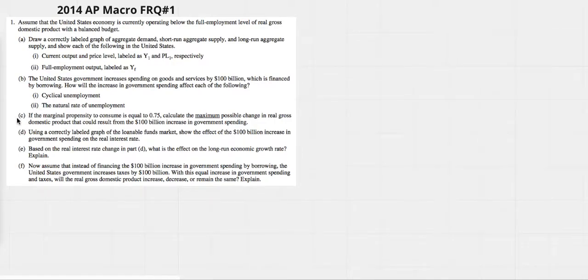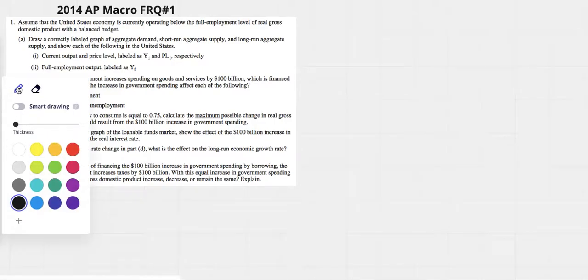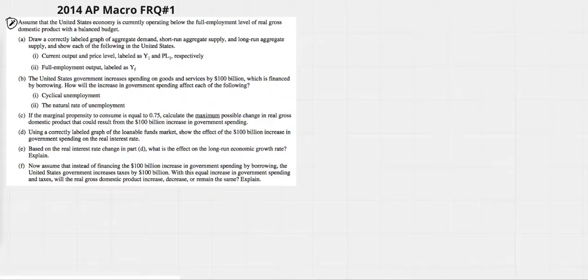I am going to work on 2014 macro FRQ today. Number one, assume that the United States economy is currently operating below full employment level of real GDP with a balanced budget.